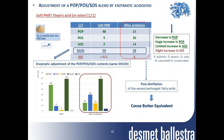A second example concerns the acidolysis reaction between a soft palm mid fraction and stearic acid mixed in a ratio of 1:1 using an SN1,3-specific immobilized enzyme. The POP, POS, and SOS balance is largely improved in the final product after acidolysis, with a decrease in POP, a huge increase in POS and SOS, and a slight increase in SSS. The excess fatty acids are also removed by short-path distillation to preserve regio-specificity. The final product may be used as such as a cacao butter equivalent or blended with other types.